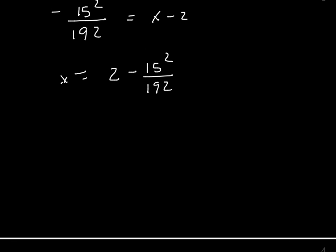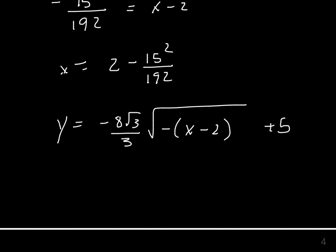We can find the y-intercept in a similar manner. We make x equal to 0, so y equals (-8√3/3)√[-(0-2)] + 5. And I make my x 0. Then I get the square root of 2, because the two negatives become positive. So I have really minus 8√3 over 3 times the square root of 2 plus 5. And whatever that is on your calculator is your y-intercept.